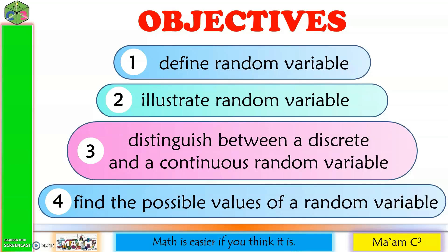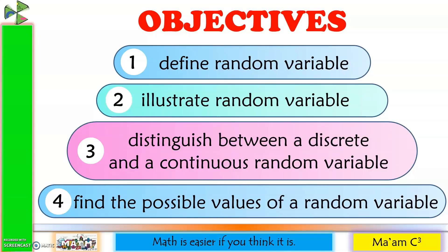Our objectives in this lesson are the following: define random variable, illustrate random variable, distinguish between a discrete and a continuous random variable, and find the possible values of a random variable.